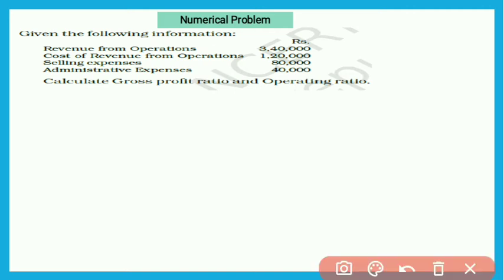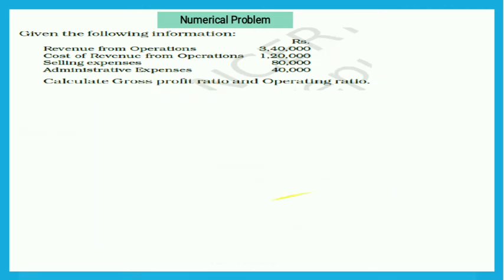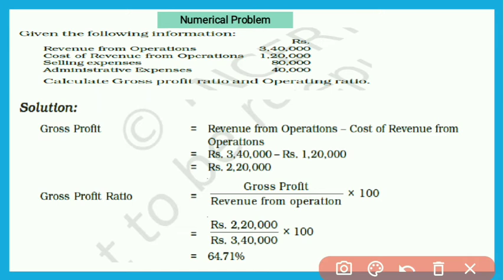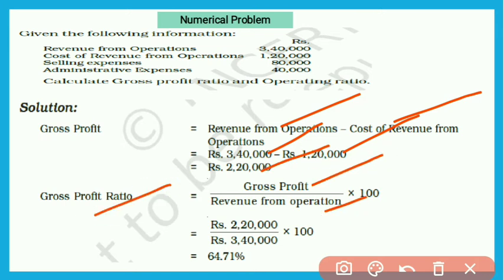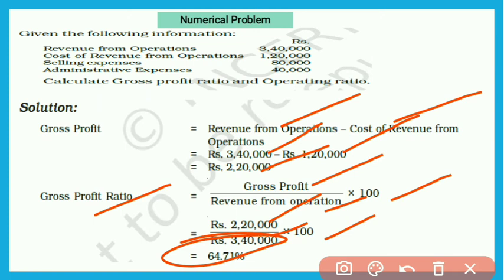See one more question. Given: Revenue from Operations = ₹3,40,000; Cost of Revenue from Operations = ₹1,20,000; Selling Expenses = ₹80,000; Administrative Expenses = ₹40,000. Calculate gross profit ratio. First, Gross Profit = ₹3,40,000 − ₹1,20,000 = ₹2,20,000. Gross Profit Ratio = ₹2,20,000 ÷ ₹3,40,000 × 100 = 64.71%. This high ratio means the business has a higher profit margin with no difficulty in meeting operating expenses and creating reserves.